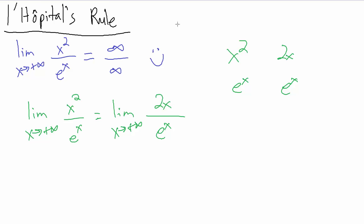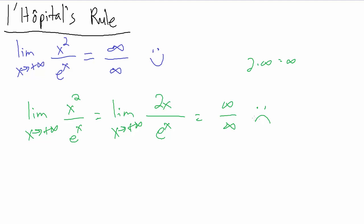Now let's try direct substitution again. As x goes to infinity, 2x goes to infinity, and e to the x also goes to infinity. So we have infinity over infinity again — that same indeterminate form. But that's okay, because it tells us we can try L'Hôpital's rule again. Sometimes you might have to use L'Hôpital's rule more than once, and that's fine.